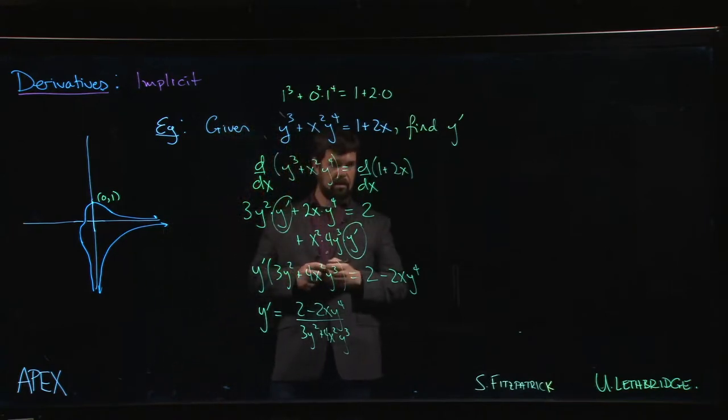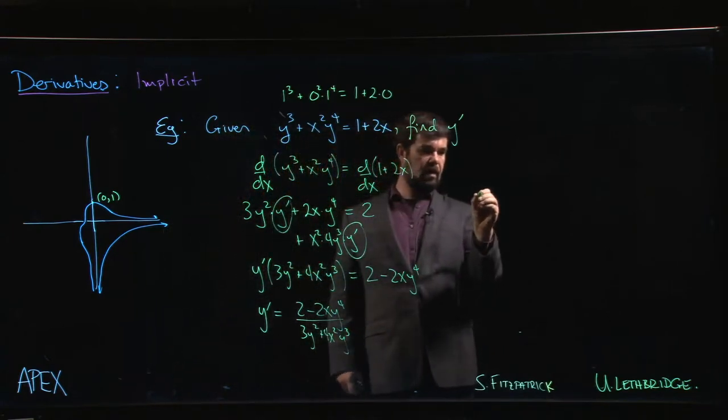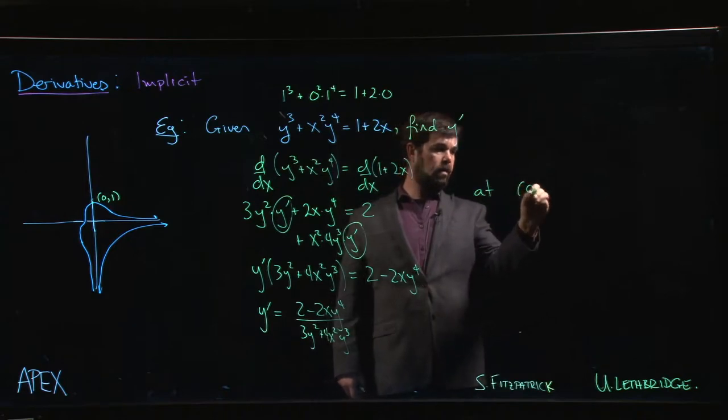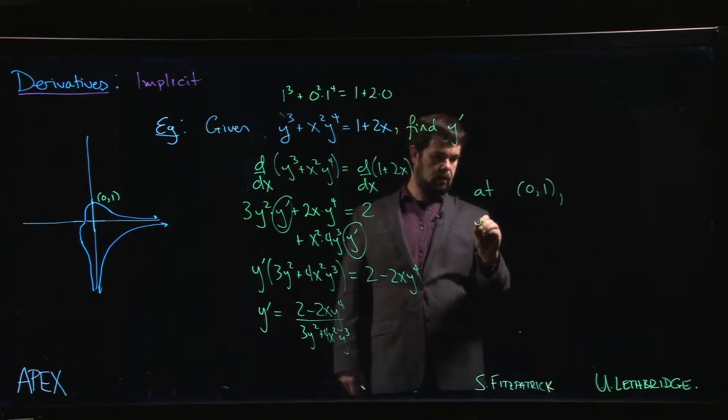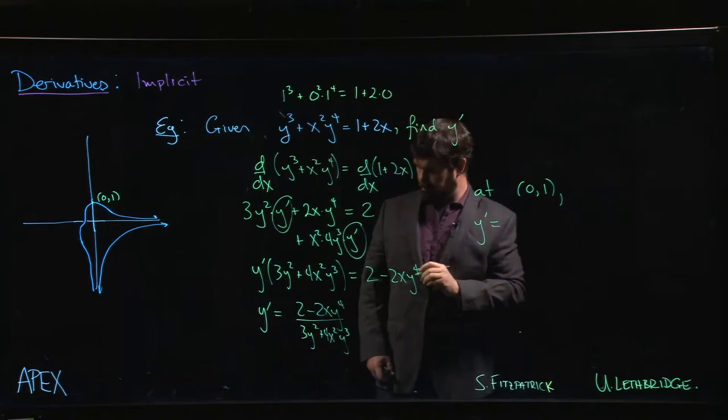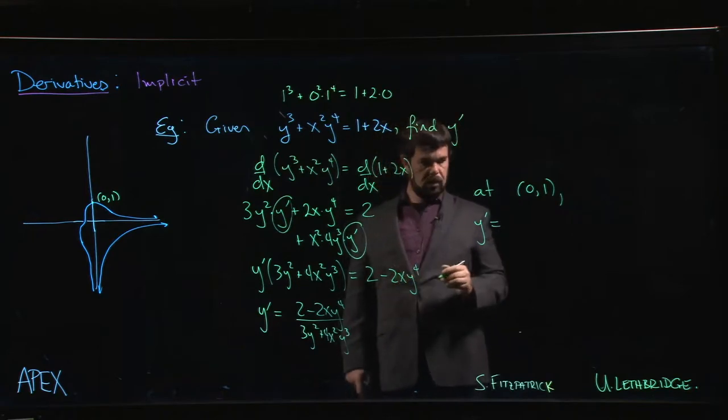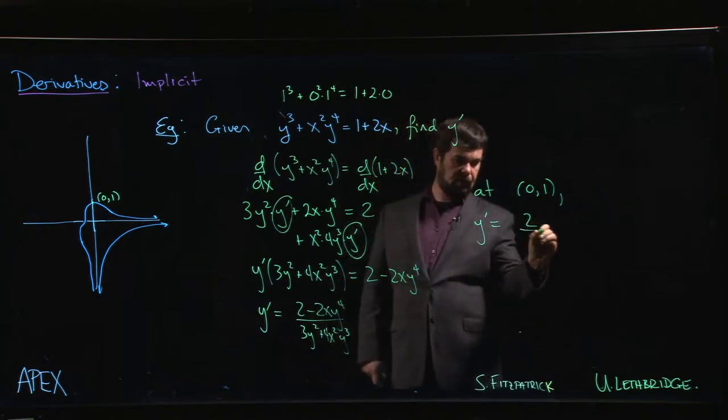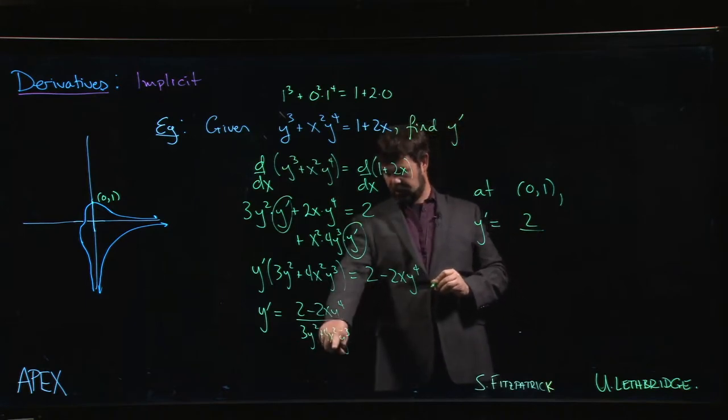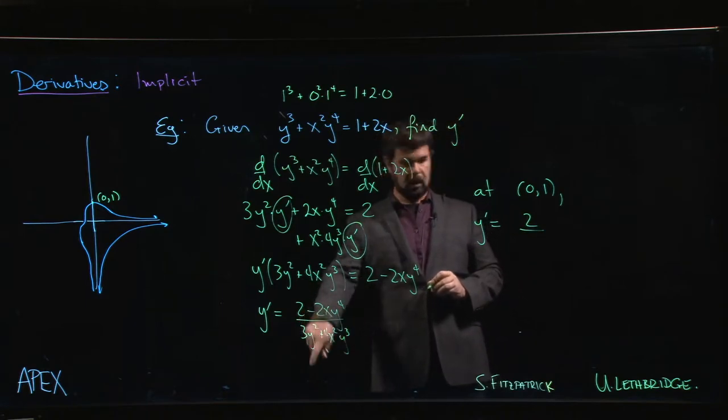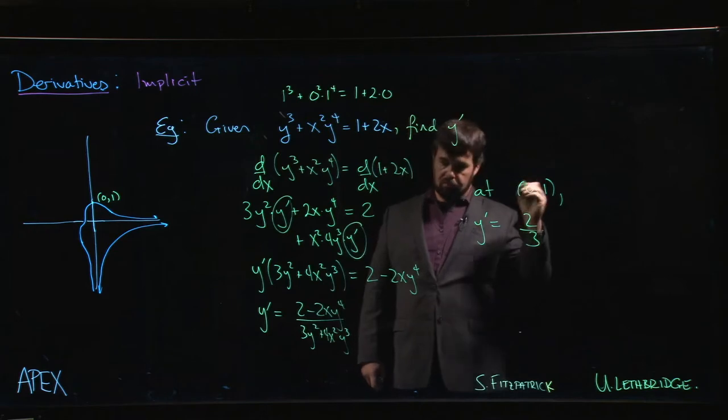So there's a point on the curve. So if we wanted to, we could say at the point (0, 1), y prime is equal to 2. So 0 makes that go away. So we simply have a 2 on top. And 0 is going to make that go away. That's going to be 3 times 1. So y prime is 2 thirds.